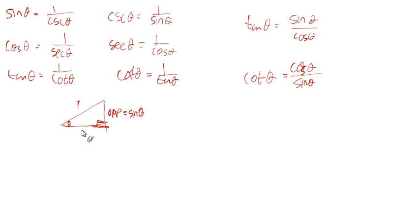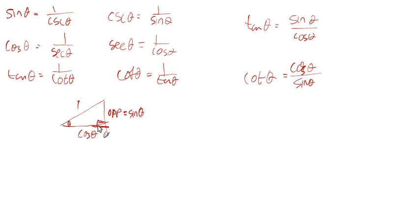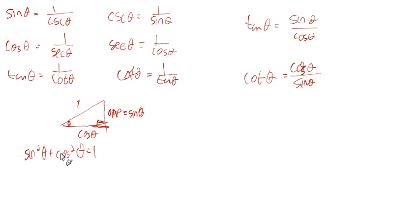Likewise, the cosine would be the adjacent side — adjacent over hypotenuse would just be the cosine, so the adjacent side equals the value of the cosine if the hypotenuse is 1. From this triangle, if we use the Pythagorean theorem, sine squared plus cosine squared equals 1 squared, so sine squared plus cosine squared equals 1. That will always be true — that's one of the Pythagorean identities.